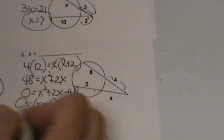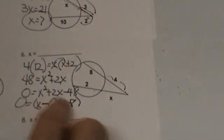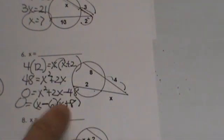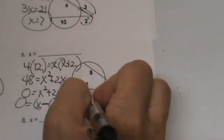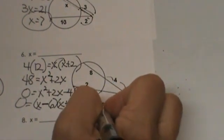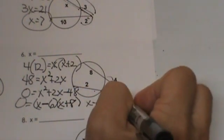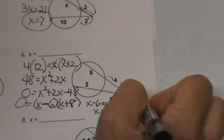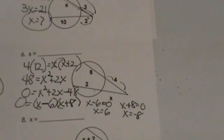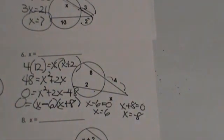Now we still haven't finished. We have it factored but we need to know the solutions. Let's go back and set each binomial equal to 0. When is x minus 6 equal to 0? When x is a positive 6. When is x plus 8 equal to 0? That is when x is negative 8. Which one do we need to throw out?